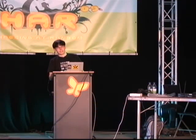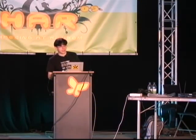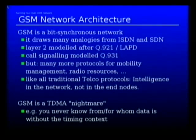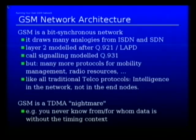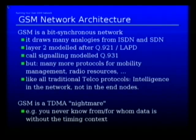The Layer 2 on GSM — specifically the Layer 2 of the air interface — is modeled after Q921, which is the LAPD protocol also used in ISDN networks. The call signaling is modeled after Q931, which is the Layer 3 protocol on any ISDN line in Europe, and generally everywhere. There are many more protocols for mobility management, radio resource management, organization and maintenance, and other aspects of the protocol.